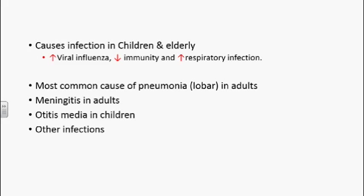Streptococcus pneumoniae, also called pneumococcus, causes infection majorly in children as well as in elderly individuals. High incidence rate of infection occurs in people suffering with viral influenza, people with low immunity, or people suffering with any other respiratory infections. It is the most common cause of lobar pneumonia in adults, bacterial meningitis in adults, and it causes otitis media in children. It can also cause septicemia and other infections.